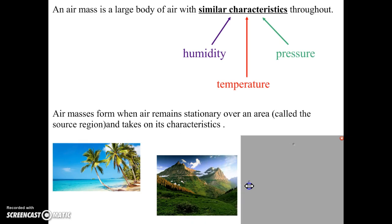If an air mass were to hang out over the mountains of Glacier National Park, it would most likely have a low humidity because it's inland, not near any large body of water, and it would probably be a cooler air mass because we're at a much higher elevation.